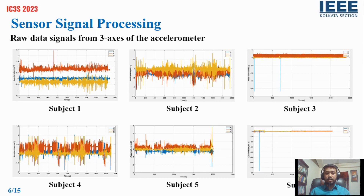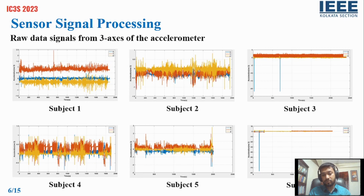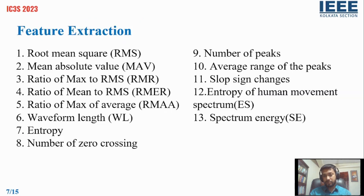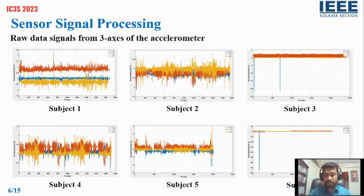Before pre-processing our data, the first step of pre-processing is applying a bandpass filter to reduce the DC component from the raw signal. After DC component reduction, we normalised our raw data. Then we segmented the data into five segments, which are called epochs. By dividing the signal into epochs, it becomes easier to analyze and extract features from a specific segment of the signal.